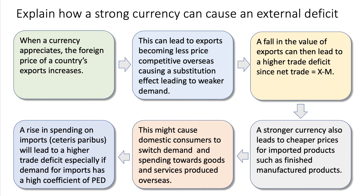A fall in export demand can then cause a higher trade deficit, since net trade is X minus M. The second impact of a strong currency is it tends to lead to a fall in the price of imported products, such as finished manufactured goods. This might cause domestic consumers to switch their spending towards goods and services produced overseas. Therefore, a rise in spending on imports, ceteris paribus, will lead to an increased trade deficit, particularly if demand for imports has a high coefficient of price elasticity of demand — if the price of imports goes down and imports are price sensitive, we'll see quite a big increase in demand for imports. So a strong currency can, in theory, lead to a widening of the trade deficit.